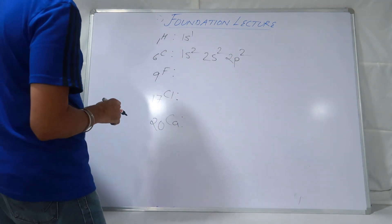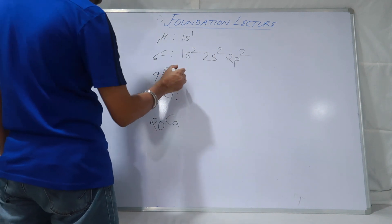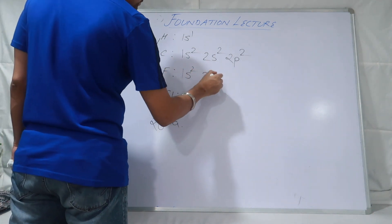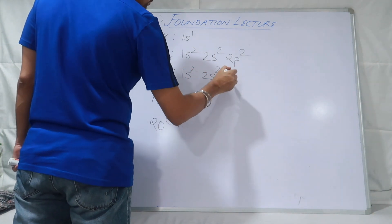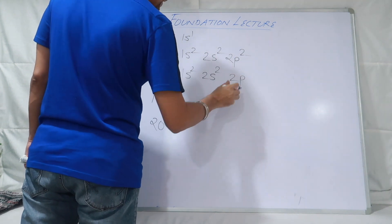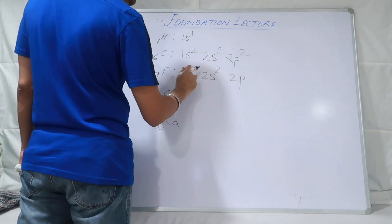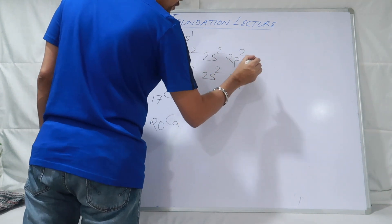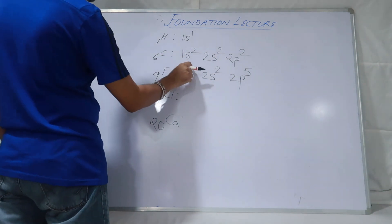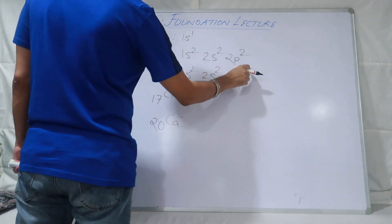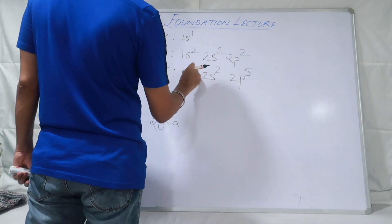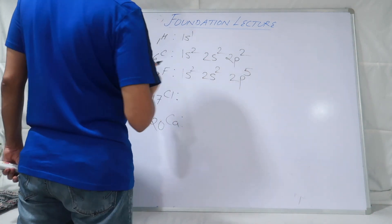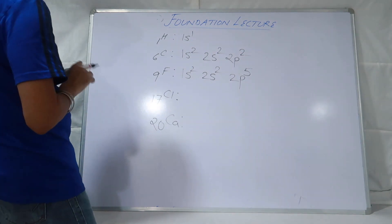Nine — Fluorine — ab aapko nine pe stop hona hai. Likho: 1s2, 2s2, 2p — agar 6 likho to woh Neon ho jaayega. Apne ko Neon nahi chahiye, Fluorine chahiye. Counting upar se hoti hai: 2+2=4, 4+5=9. To 2p5 likhoge. Theek hai.